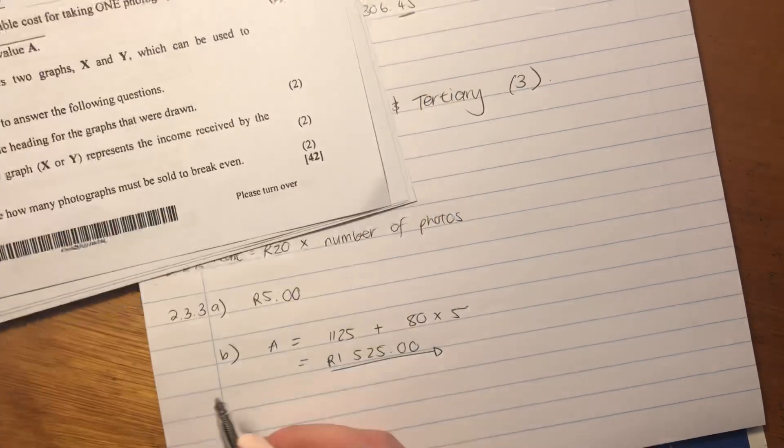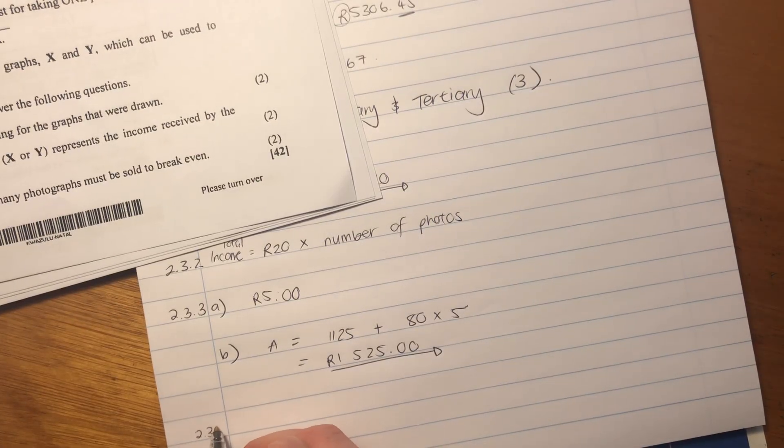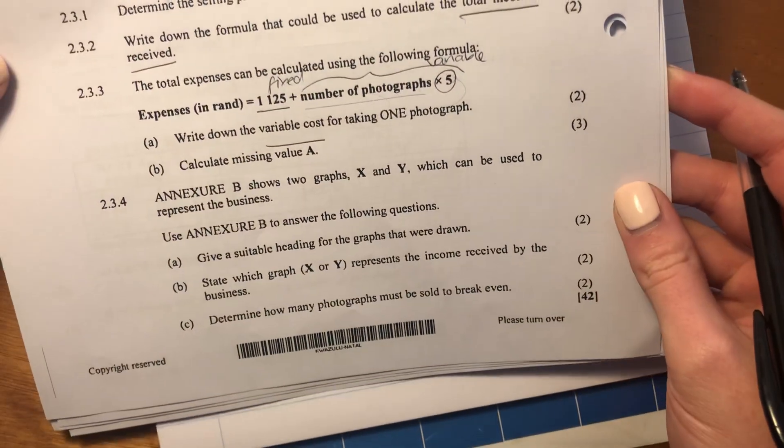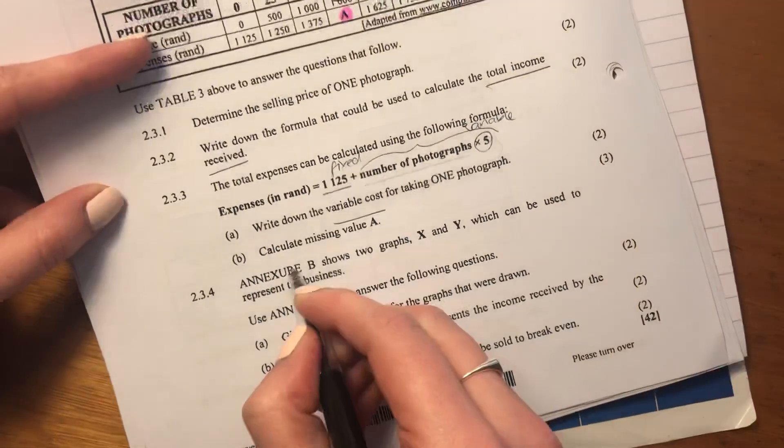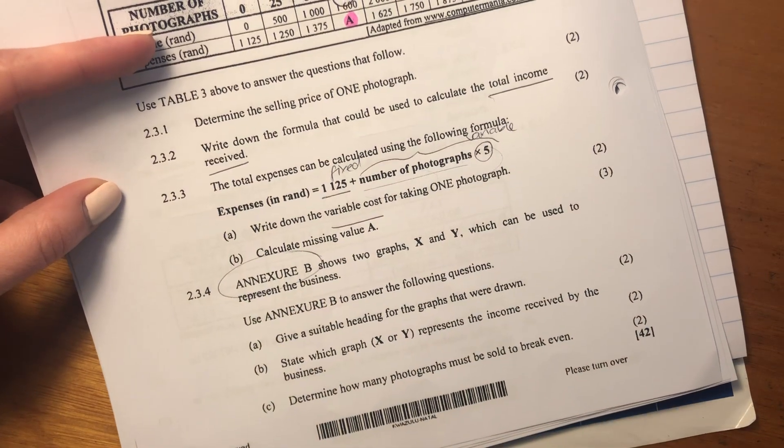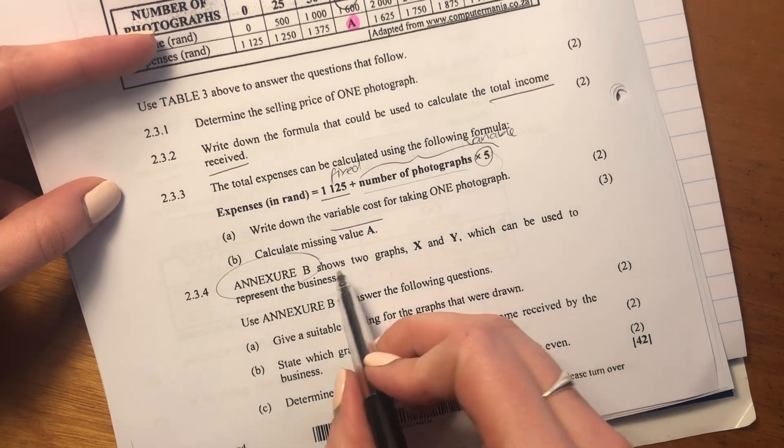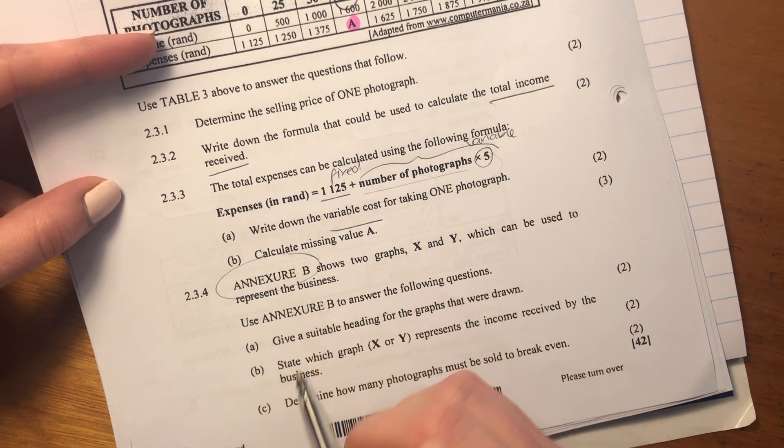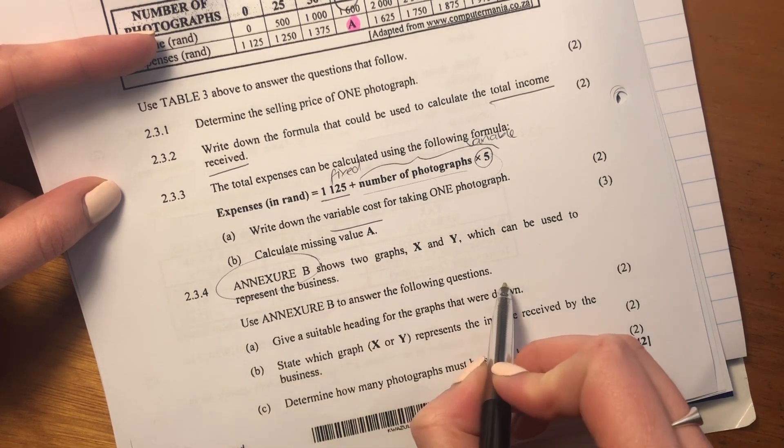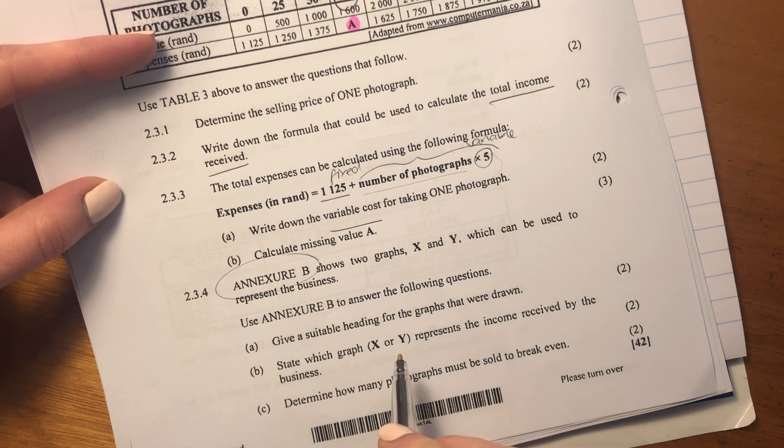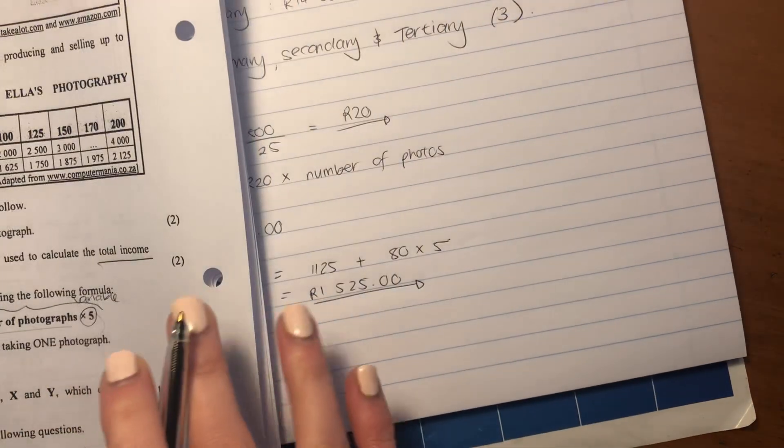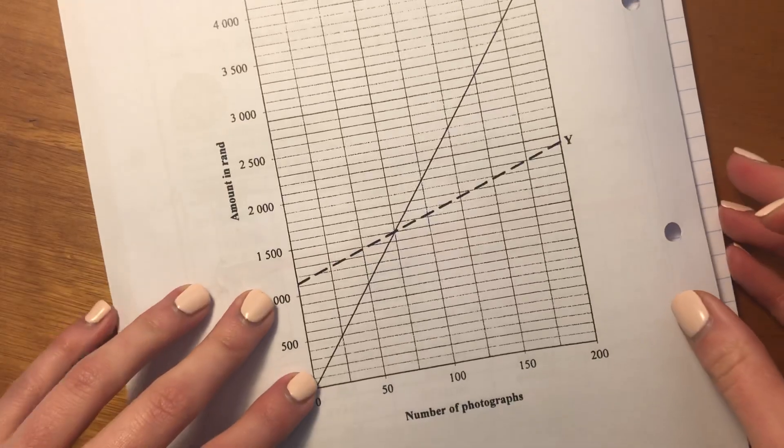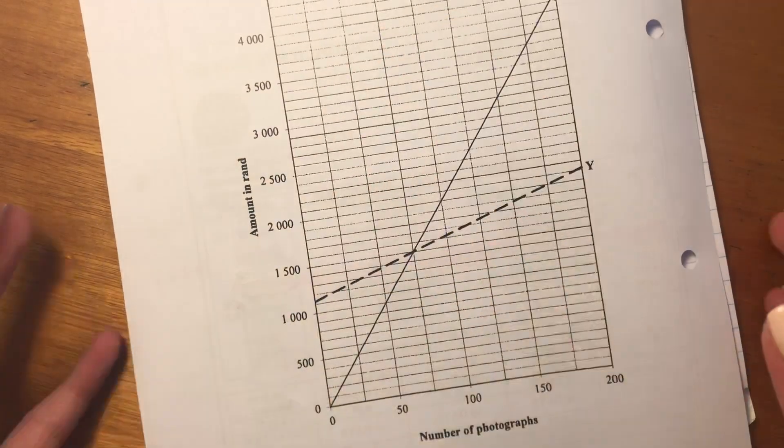Okay, so we're done with A. Let's now move on to 2.3.4. It says, annexure B shows two graphs. Again, you have to remember that you have these annexures. Please don't forget about them. Shows two graphs, X and Y, which can be used to represent the business. Use annexure B to answer the following questions. Give a suitable heading for the graph. Let's first see the graph. So here's the graph. Okay, so you should be able to recognize...